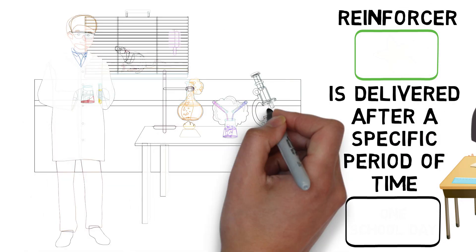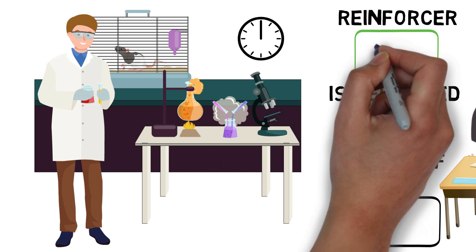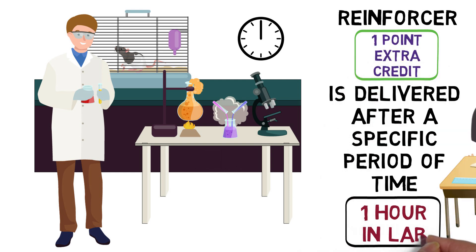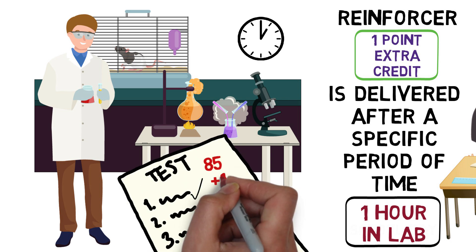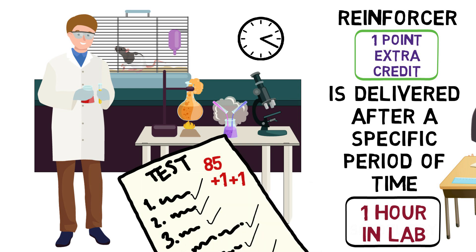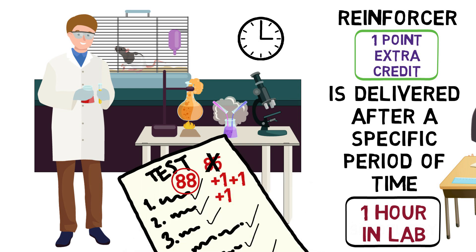For Daryl here, he is staying after class to help in the lab. His professor offers an extra credit point for every hour a student spends in the lab. Daryl plans on spending three hours in the lab this afternoon, which means he will earn three extra credit points toward his exam.